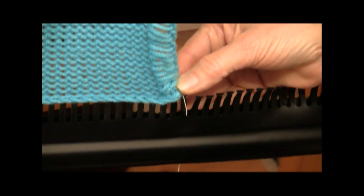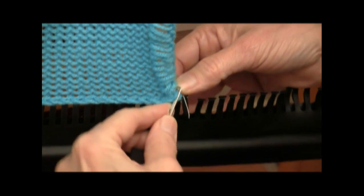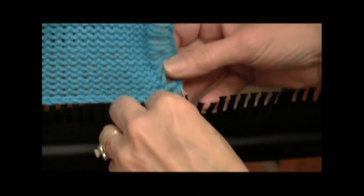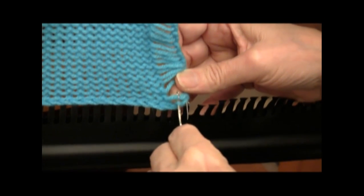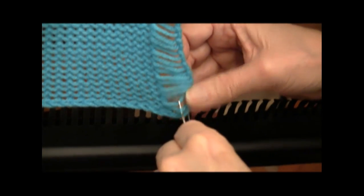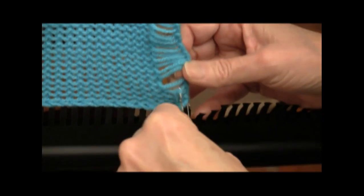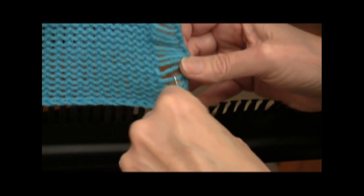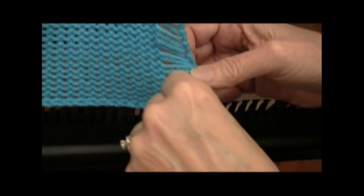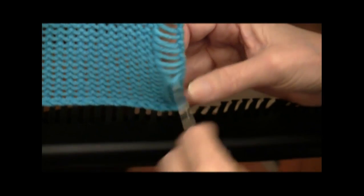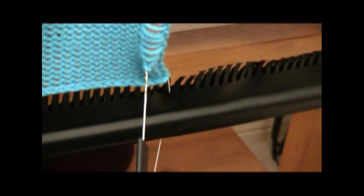I unravel the knitting for that one stitch all the way down to the bottom, and then I insert the latch tool in that very bottom loop, and I can go ahead and latch up the stitch, which reforms it into a purl stitch, and it makes ribbing. And I have to do that on every other needle all the way across the work.